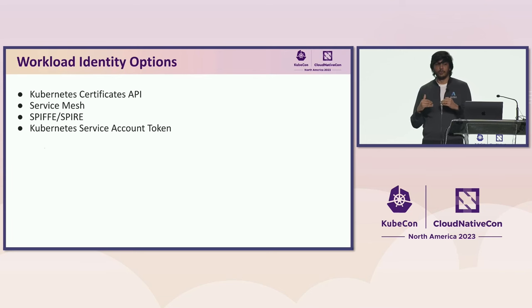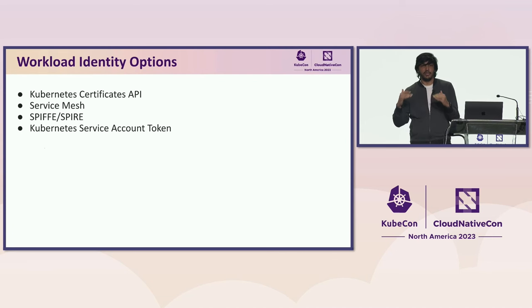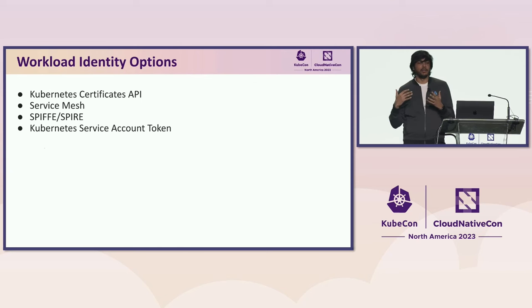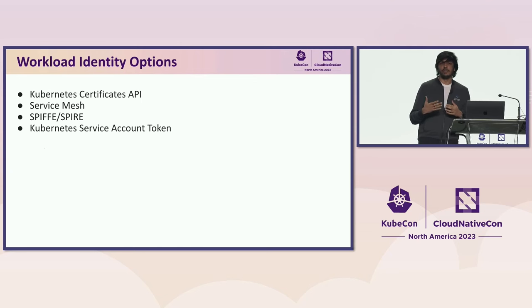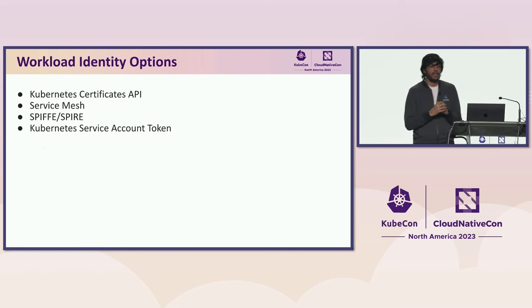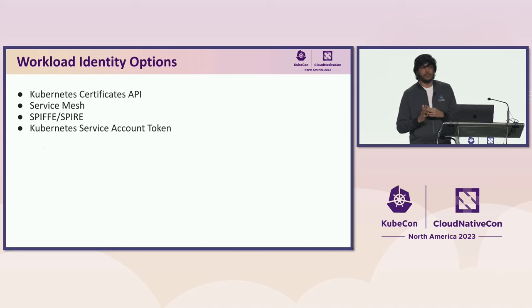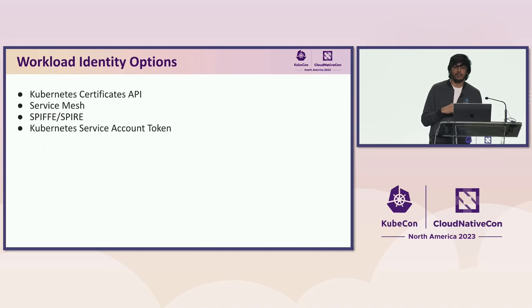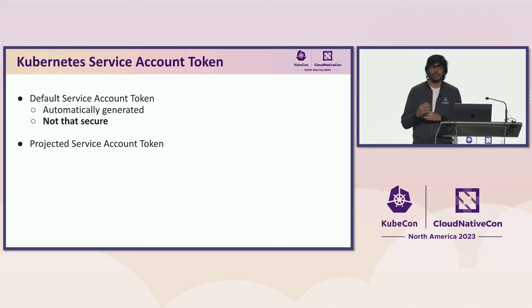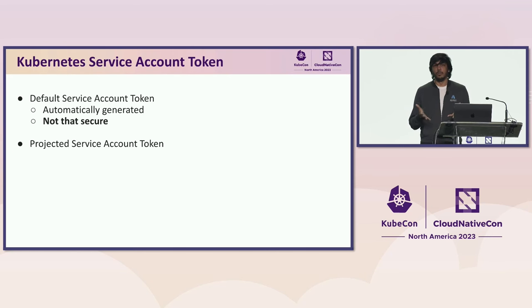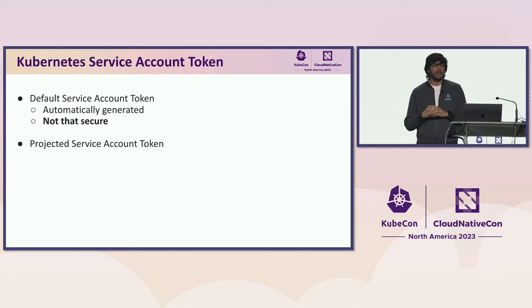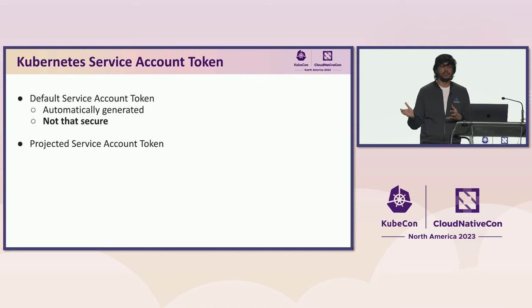Before talking about the fourth option — Kubernetes service account tokens — note that Service Mesh and SPIRE are add-ons that need to be additionally installed in the cluster. They don't come by default, and the Certificates API needs groundwork to implement an approver. This brings us to Kubernetes service account tokens. Why use them? The first reason is simplicity: they are built into the Kubernetes platform, making them the straightforward option for managing identity within a Kubernetes cluster. You don't need any external services or additional components.